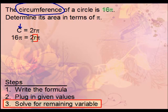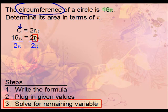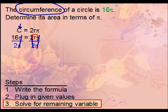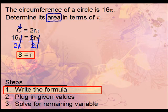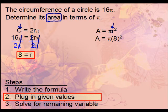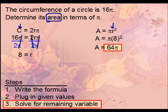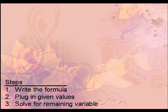The circumference is 16π, so plug that in for C. Solve for r by dividing both sides by 2π — the 2s and pis reduce out, leaving r = 8. Now use the area formula: plug in r = 8, giving 8 squared = 64, so the area is 64π.